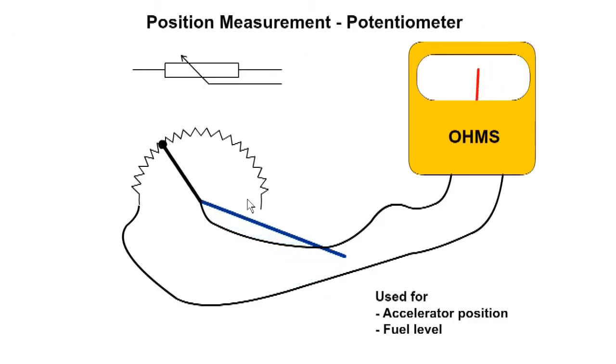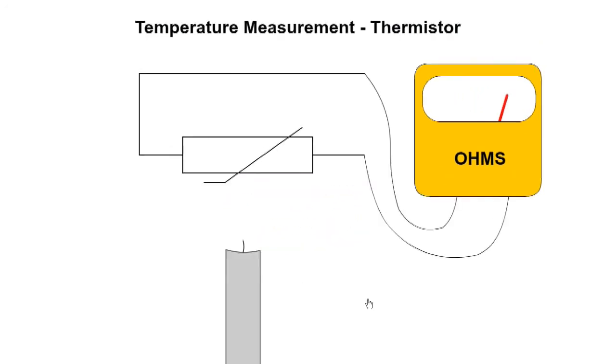The angular position sensor uses a resistor or potentiometer to determine position. As the wiper moves, the resistance is varied and provides a signal to the ECU. They are used for accelerator position and fuel level measurement.